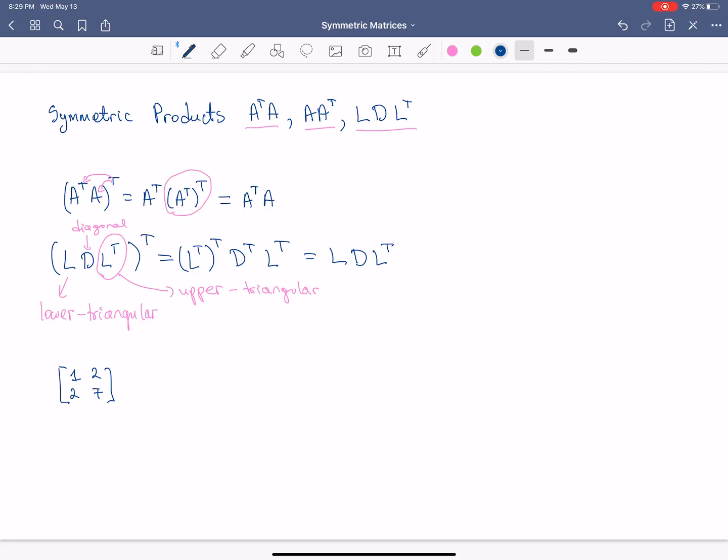So if I do this, I have to eliminate under the first pivot. And with that, I get, I need to write R2 minus 2R1 into R2. And I will get 1, 2, 0, 7 minus 4 is a 3. And what's interesting is that I can stop here. I don't have to continue.